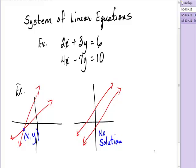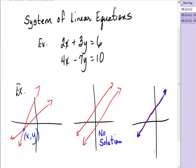Finally, there is a third scenario where you graph all the solutions to a linear equation, and when you look at all the solutions to the other linear equation, you find out that they actually are the same. Those are what we call coincidental lines — they are the same line. When that happens, these two equations share an infinite number of solutions.